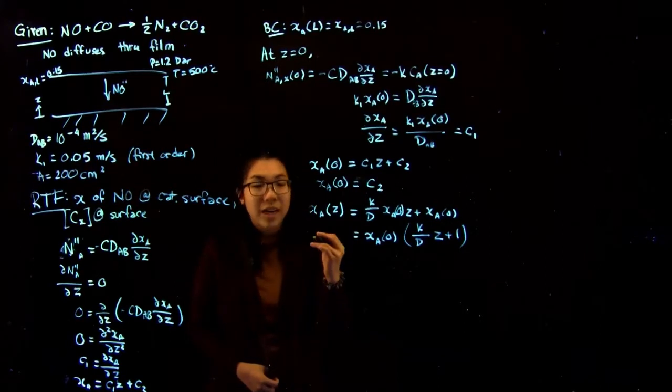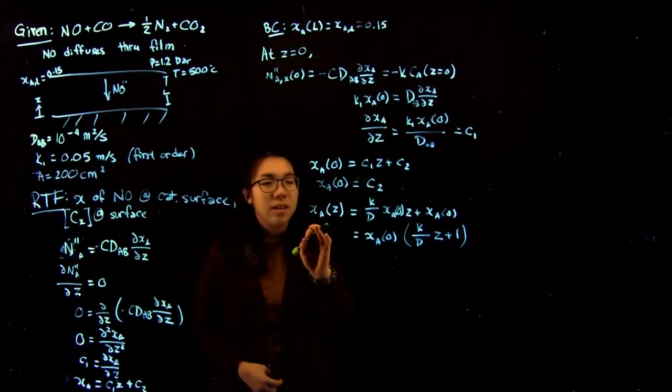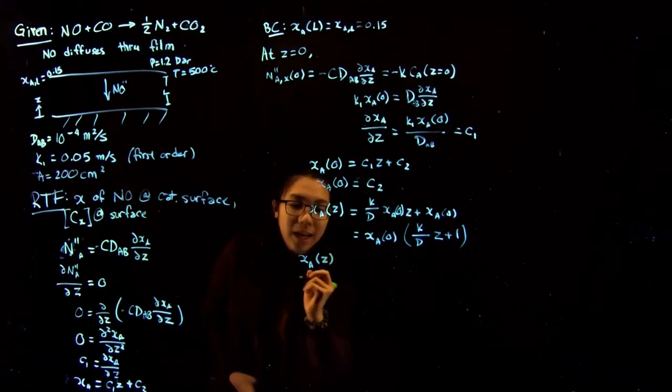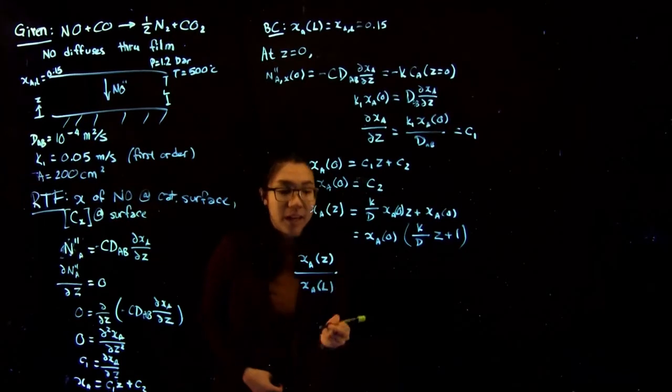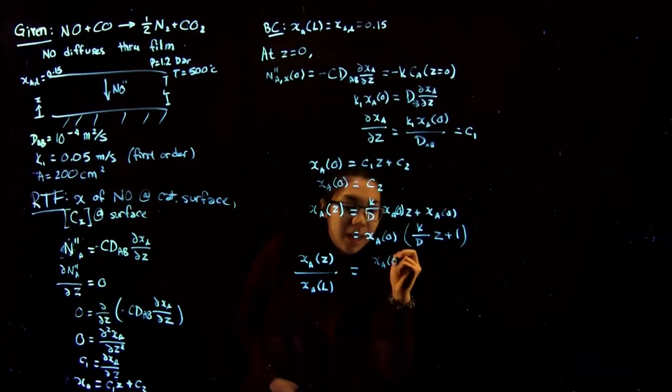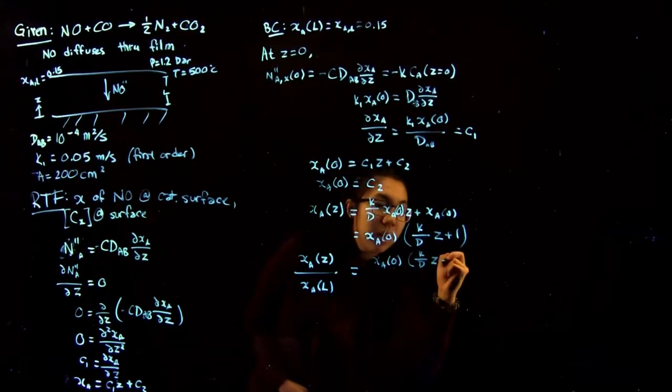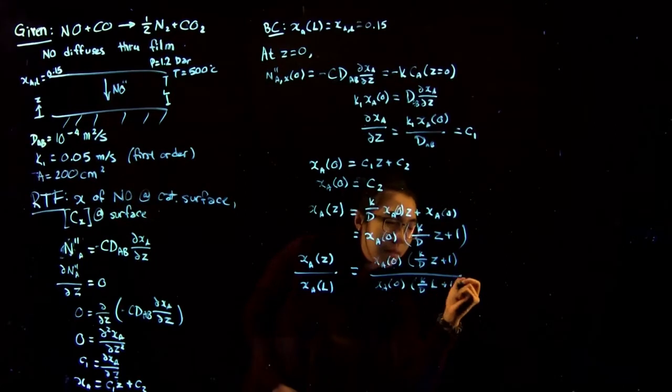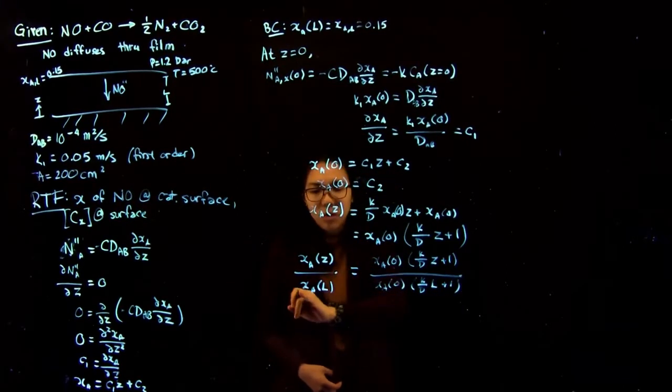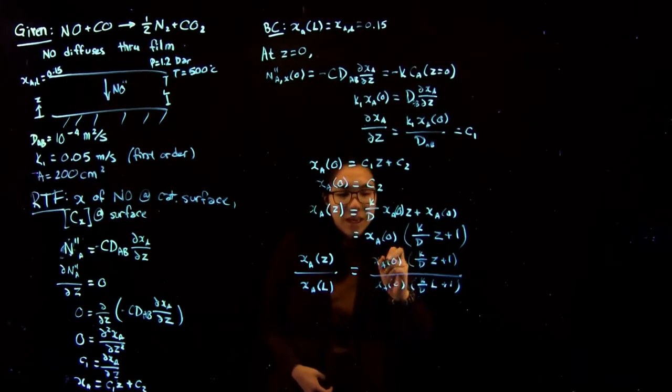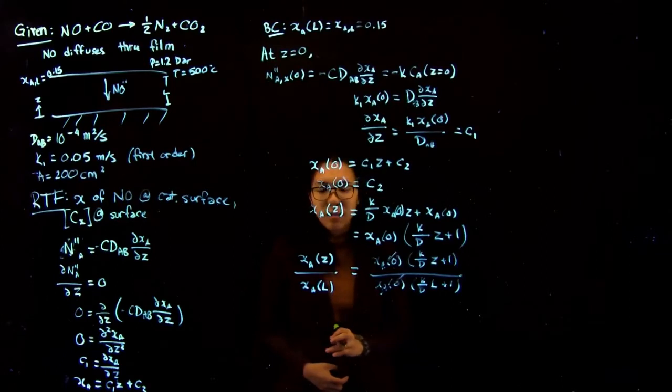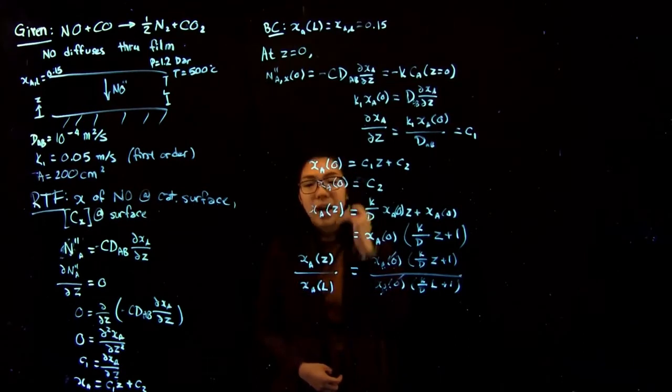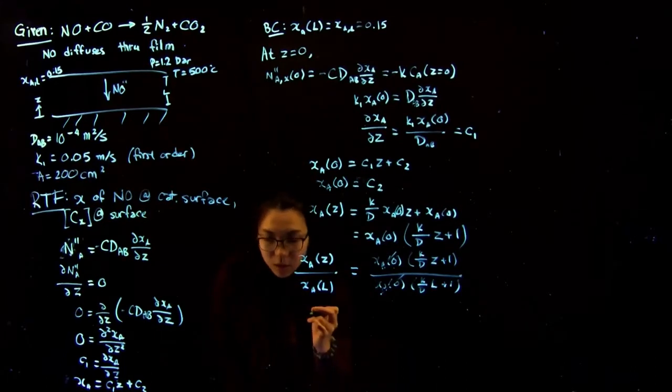But what we can do is write a ratio, essentially divide this by a known value. So by this I mean we're going to say XA at any distance Z over XA at L is going to give us XA at zero times K over D Z plus one. So by having this ratio, this actually works because everything here is known. We can cancel out this factor XA at zero. So we can actually just get a profile for the mole fraction at any Z with respect to the mole fraction at our distance L.